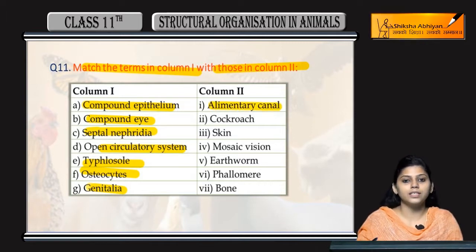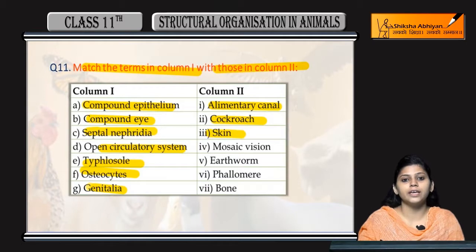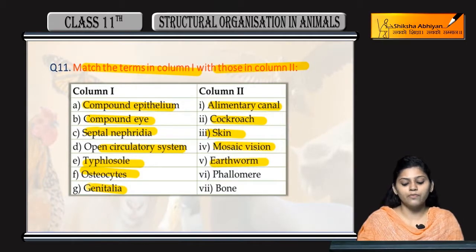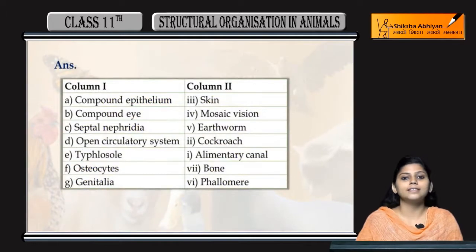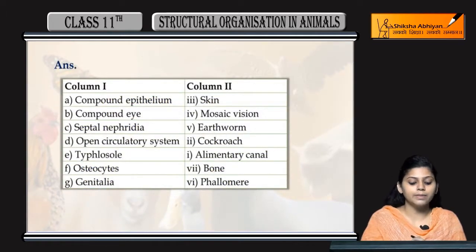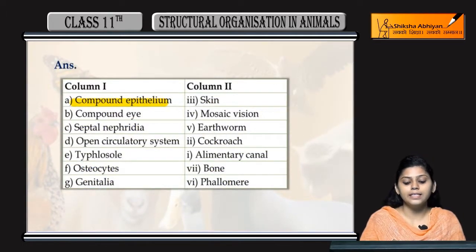Column 2 mein ye kis kis se match karna hai: elementary canal kisse related hai, cockroach ka kya feature hai, skin se kya relation hai, mosaic vision, earthworm, phelomer or bone.